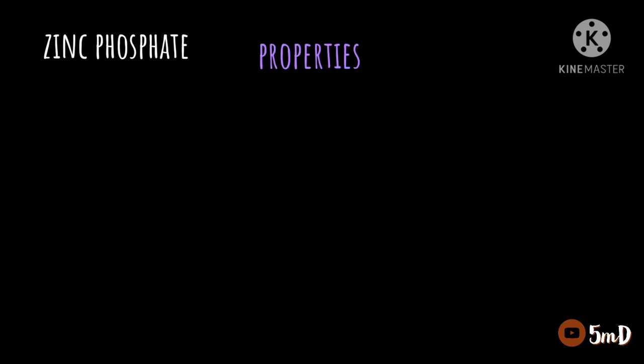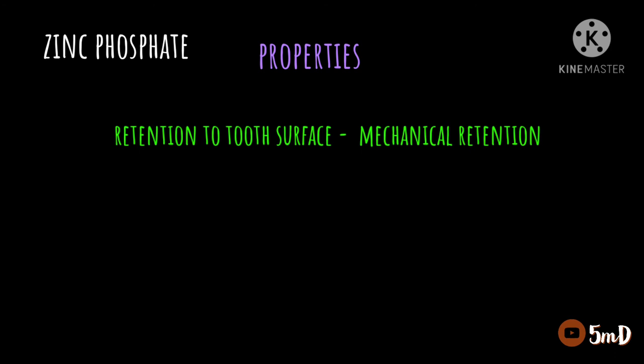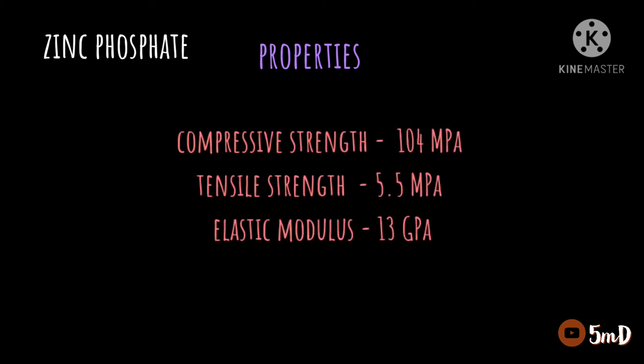Now let us see the properties of zinc phosphate cement. The mechanism of retention of cement to the tooth is by mechanical retention — not chemical retention as seen in glass ionomer cement. The mechanical properties include a compressive strength of 104 MPa, a tensile strength of 5.5 MPa, and an elastic modulus of 13 GPa, making it a strong and stiff cement.